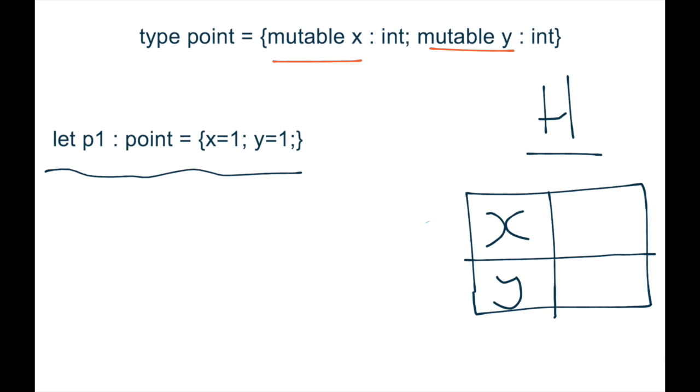But because these are mutable fields, as we know from that mutable keyword, you denote that by drawing an extra box. So you have a double box where each of the values go. So where both are 1, you have 1 and 1. And the reason that you do that is to denote that this value on the heap is mutable.